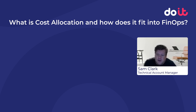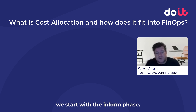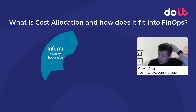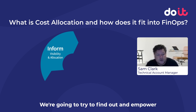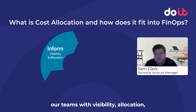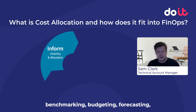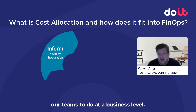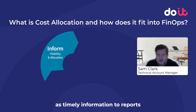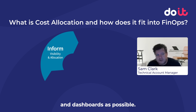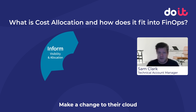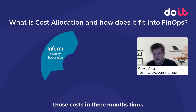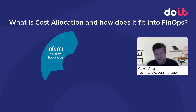Within FinOps, we talk about three phases. It's an iterative process where we start with the inform phase, which is really where we're getting information about our cloud usage. We're going to try to find out and empower our teams with visibility, allocation, benchmarking, budgeting, and forecasting — all the things that we need our teams to do at a business level. We want to give them as timely information in reports and dashboards as possible. We don't want people to make a change to their cloud usage or architecture and then be reviewing those costs three months later — we want it to be close to real time.